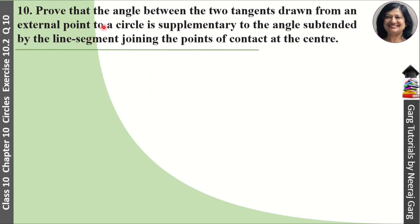Prove that the angle between two tangents drawn from an external point of a circle is supplementary to the angle subtended by the line segment joining the points of contact at the center.